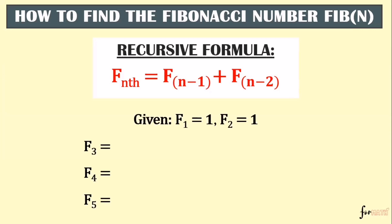Given F1 = 1 and F2 = 1, let us find the 3rd, 4th, and 5th numbers using the recursive formula. For the 3rd term, F3: our n here is 3 because we're looking for the 3rd term. So we have F(3-1) + F(3-2), which means F2 + F1.